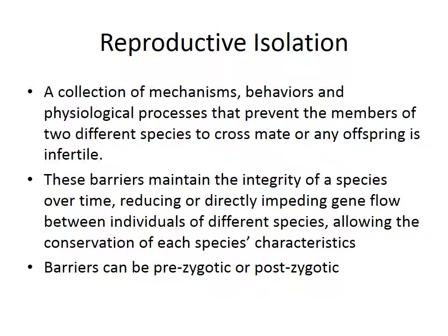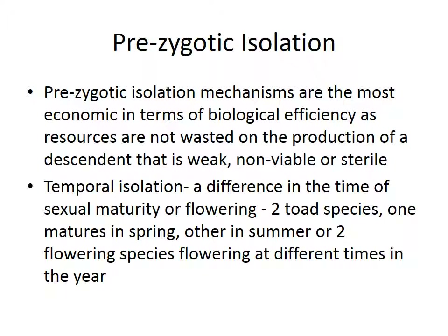Barriers can be prezygotic — before fertilization — or postzygotic — after fertilization has already happened between the wrong species. Prezygotic isolation mechanisms are the most economical in terms of biological efficiency, as resources are not wasted on producing a descendant that's weak, non-viable, or sterile. You don't want to spend all this energy producing an offspring only to find it didn't work — so you cut it off early before it goes on.